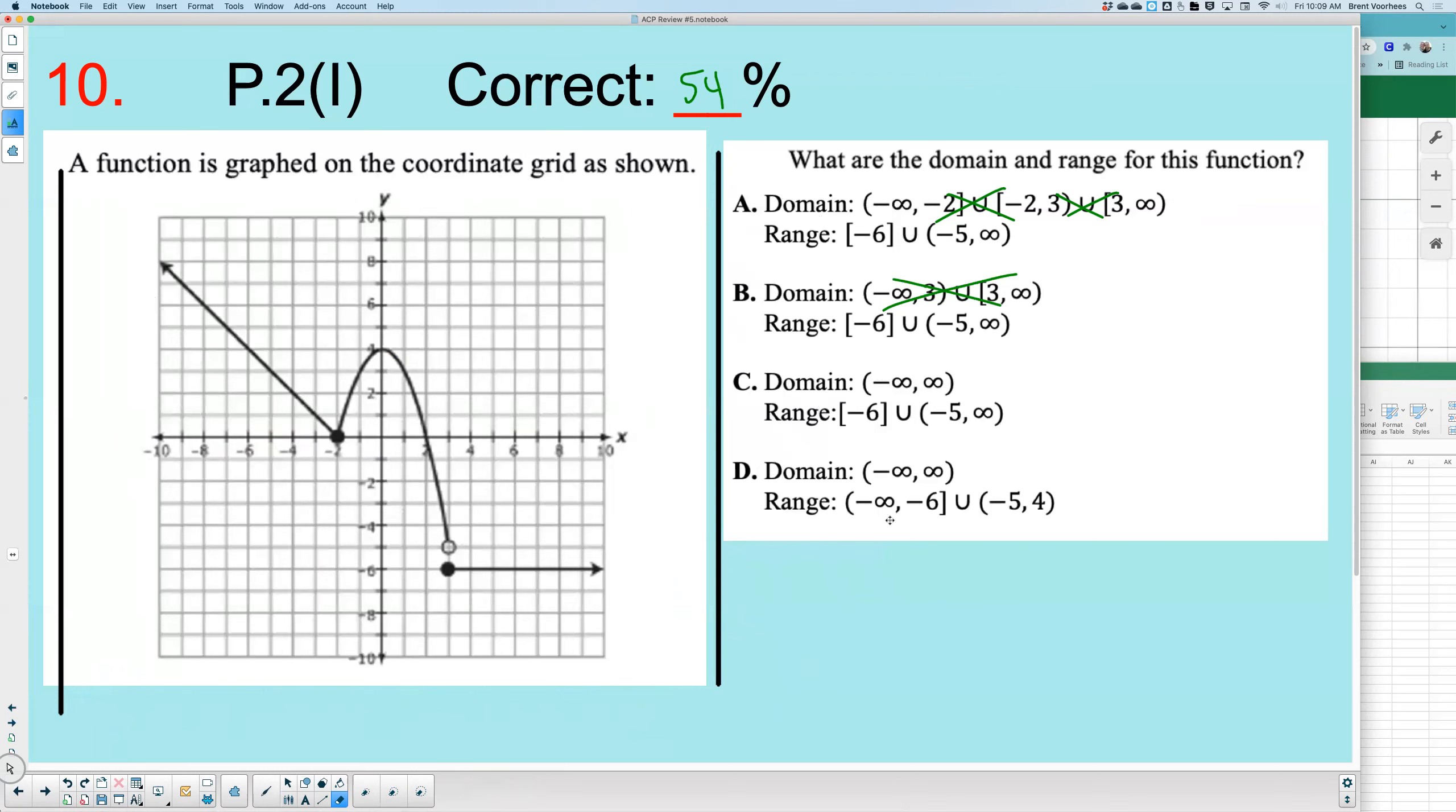So I can actually eliminate D, because this says it goes down forever. That one's out. The answer has to be C.